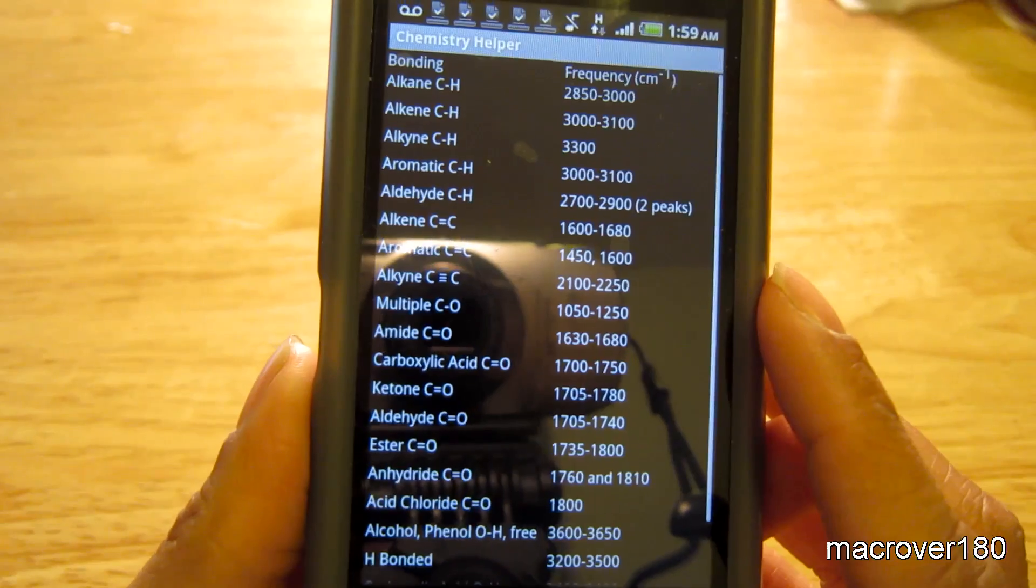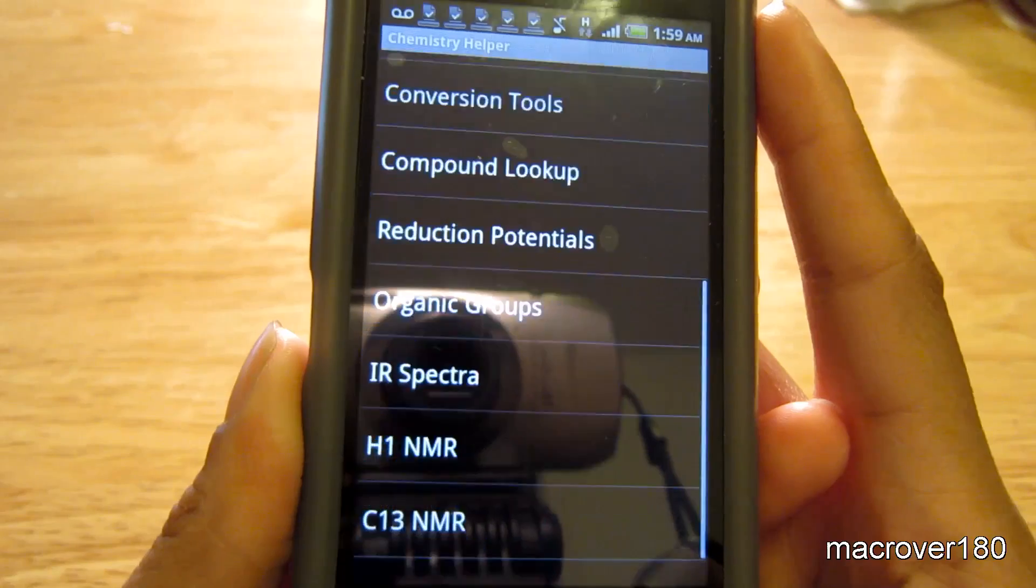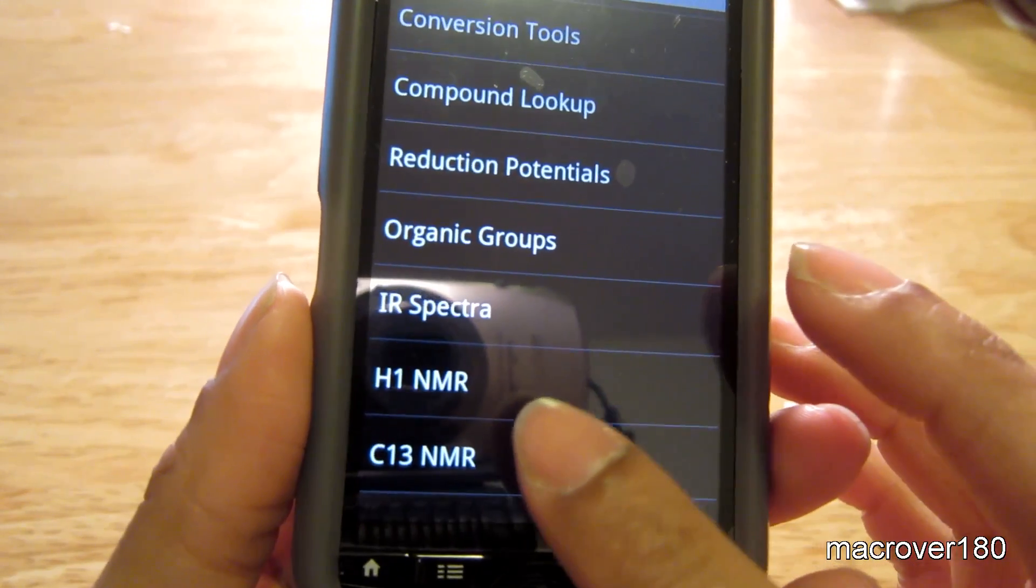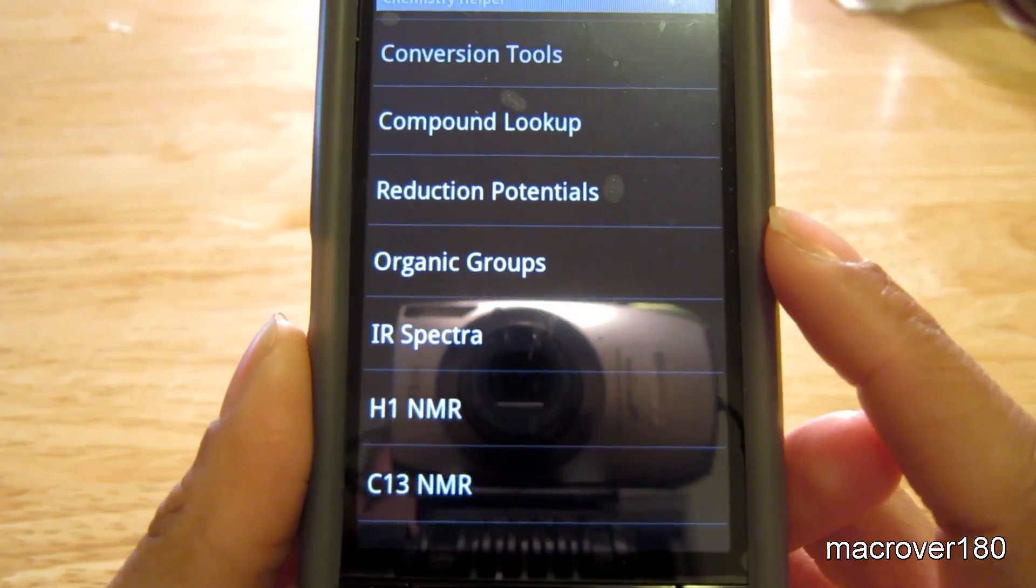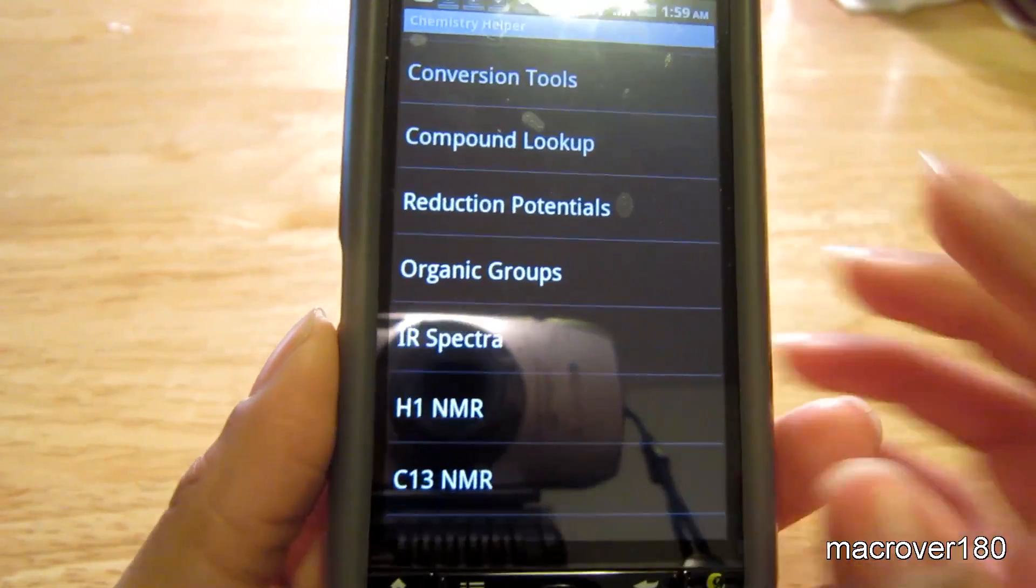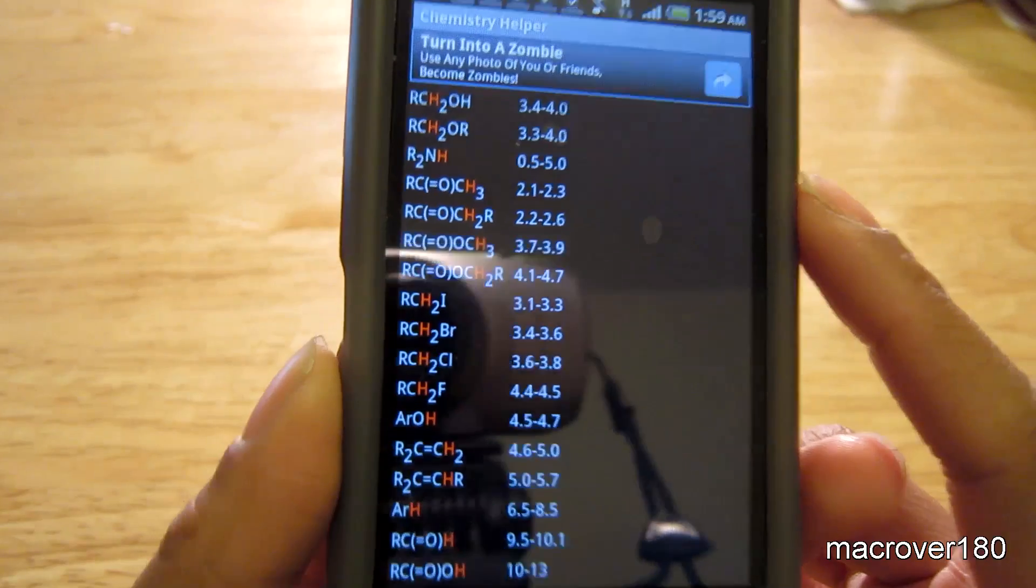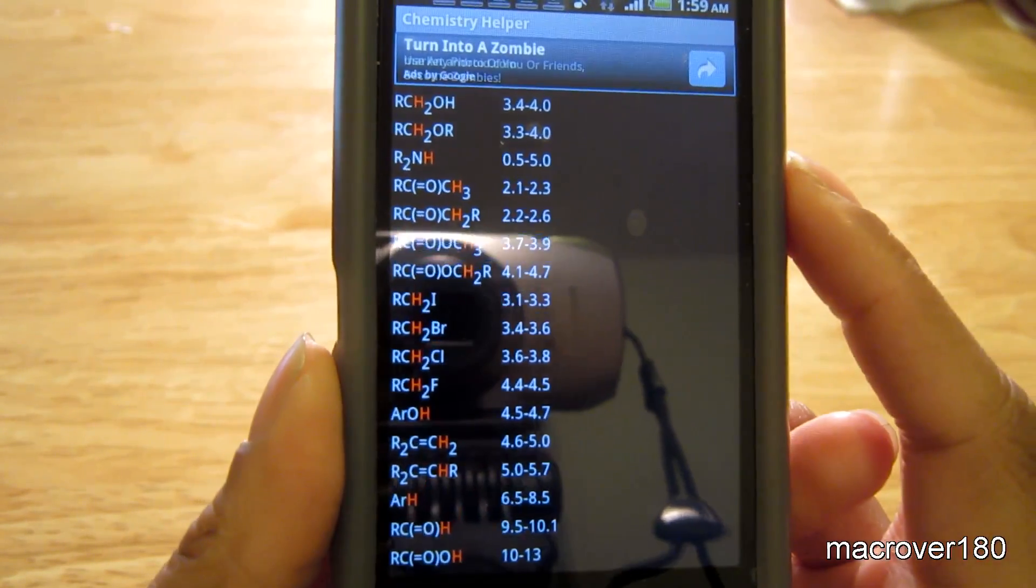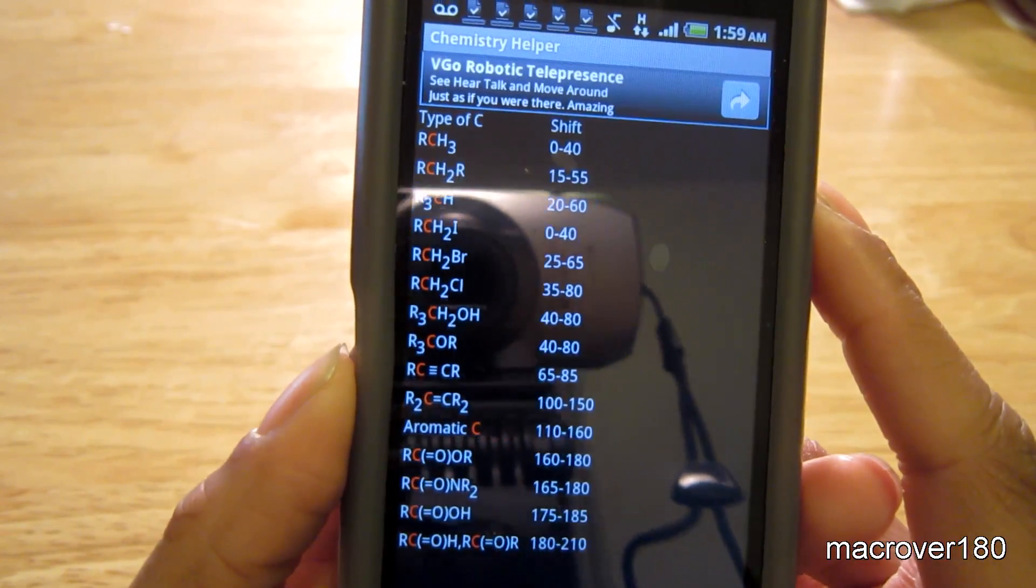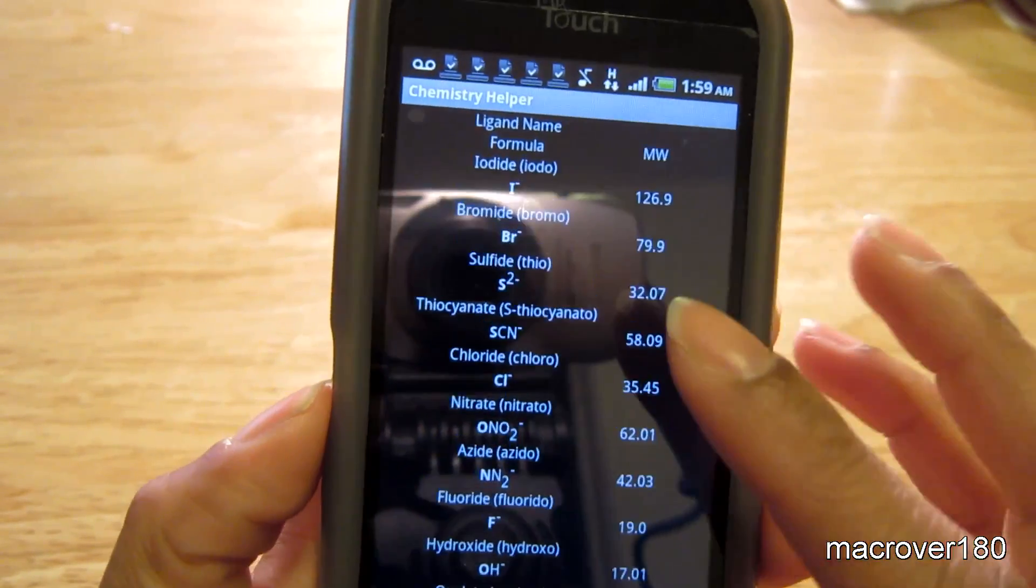IR spectra listed here. H1NMR and C13NMR spectroscopy tables. You have them here. You have that there. And finally you have carbon ligands.